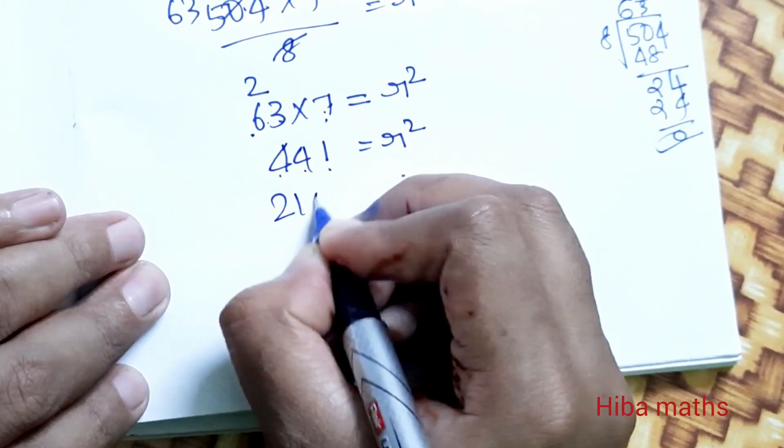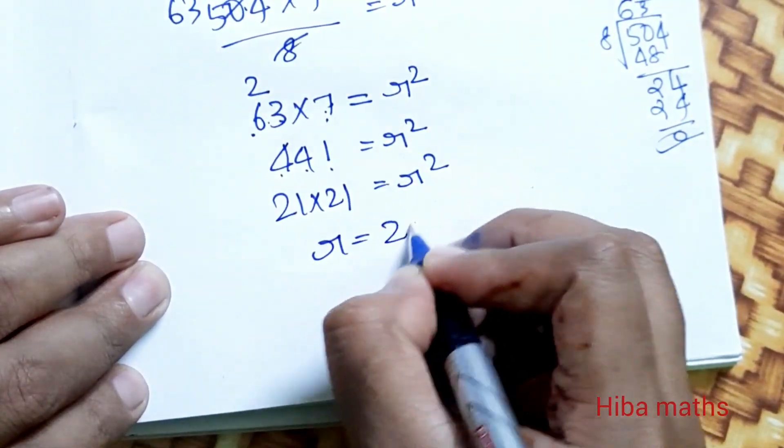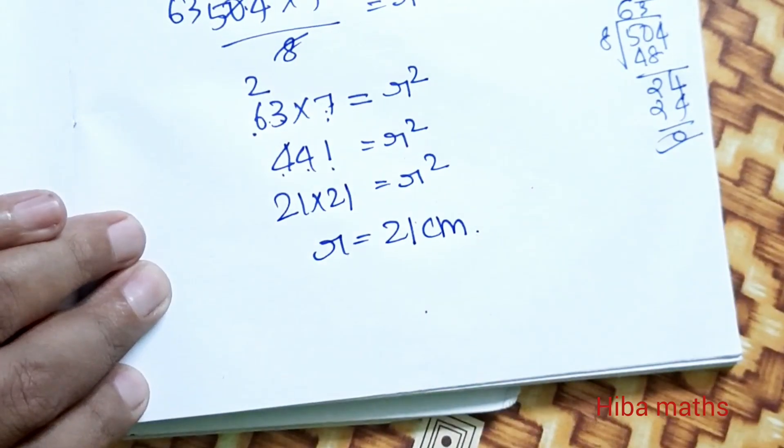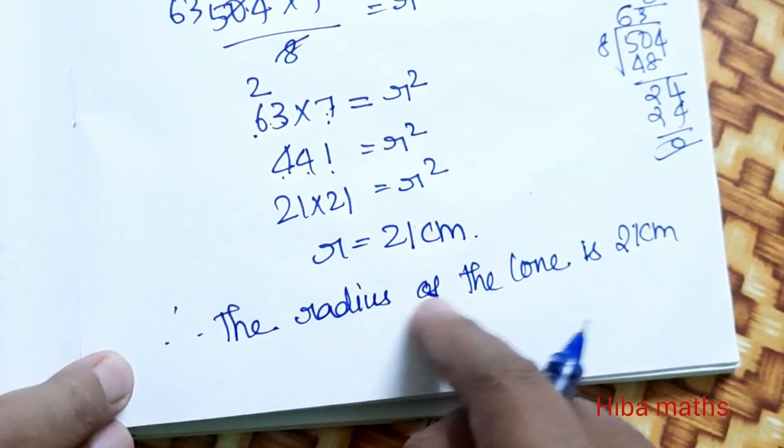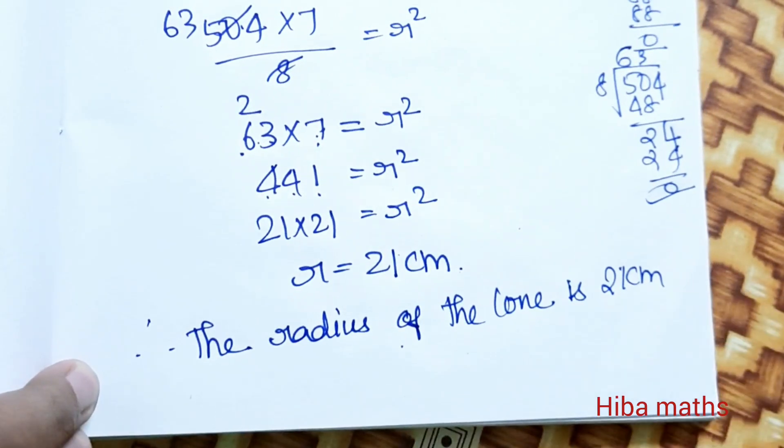21 into 21, that is equal to r². So r value is 21 cm. Therefore, the radius of the cone is 21 cm. Thank you so much for watching.